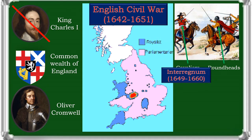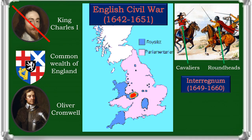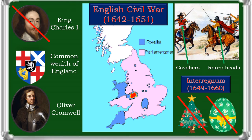The Interregnum was the period between the execution of Charles I on 30 January 1649 and the arrival of his son, Charles II, in London on 29 May 1660, which marked the start of the Restoration of the English monarchy. During the Interregnum, England was under various forms of republican government. After the Parliamentarian victory in the Civil War, the Puritan views of the majority of Parliament and its supporters began to be imposed on the rest of the country. The Puritans advocated an austere lifestyle and restricted what they saw as the excesses of the previous regime. Most prominently, holidays such as Christmas and Easter were suppressed, and pastimes such as the theatre and gambling were also banned. These changes are often credited to Oliver Cromwell.